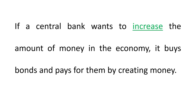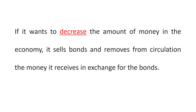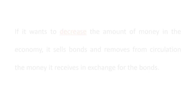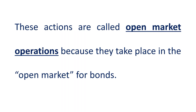If a central bank wants to increase the amount of money in the economy, it will buy bonds and pays for them by creating money. If a central bank wants to decrease the amount of money in the economy, it will sell bonds and removes from circulation the money it receives in exchange. These actions are called open market operations because they take place in the open market for bonds.